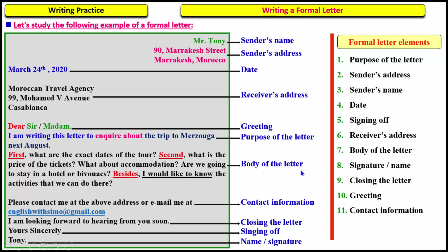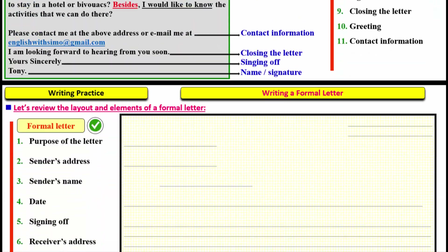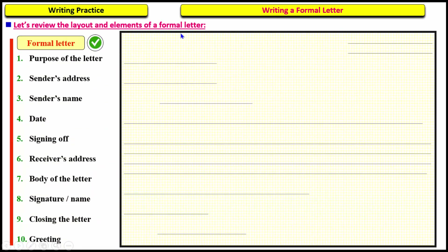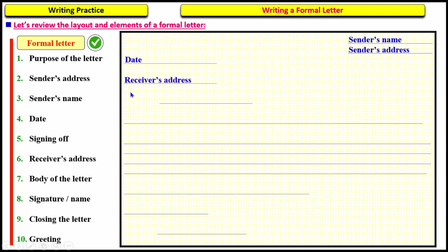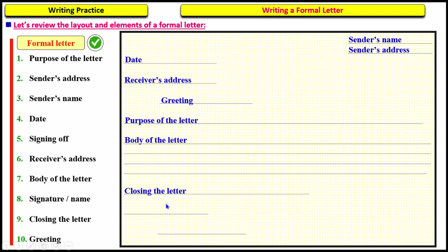Let's do some practice exercises. In the first exercise we will review the layout and elements of a formal letter. Pause the video and put each letter element in the appropriate place. The correct placement is: sender's name, sender's address, date, receiver's address, greeting, purpose of the letter (why you are writing), body of the letter, closing, signing off, and finally name and signature.